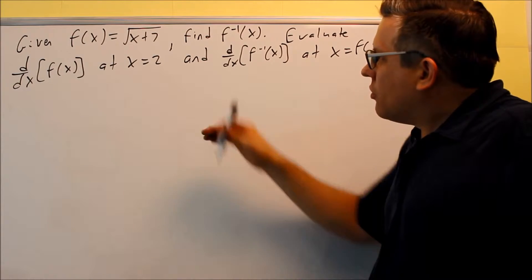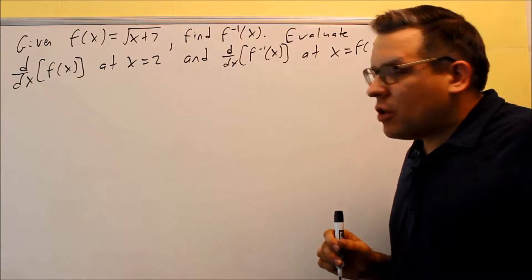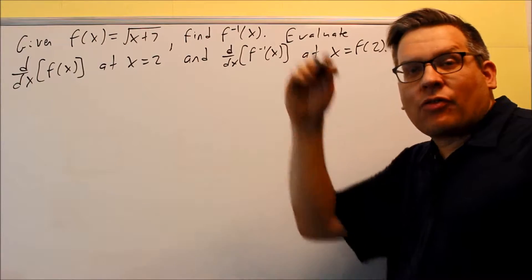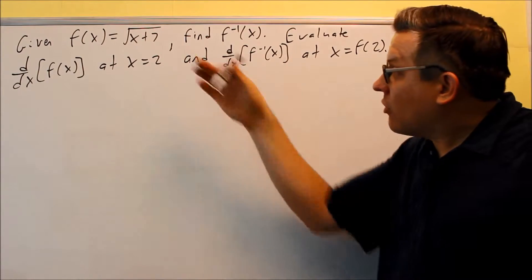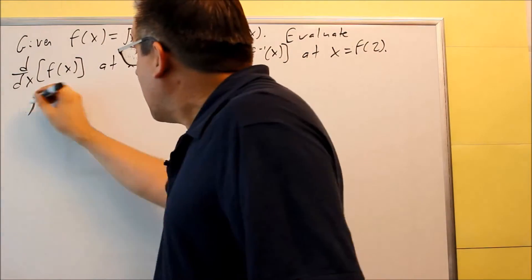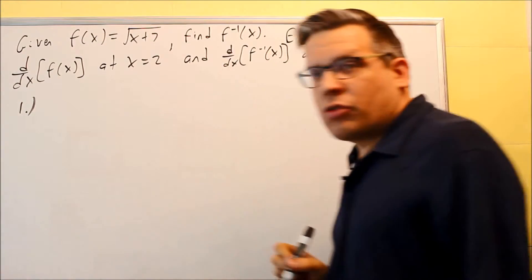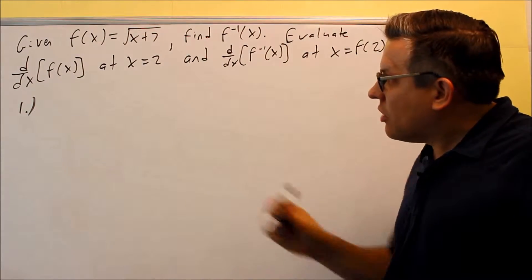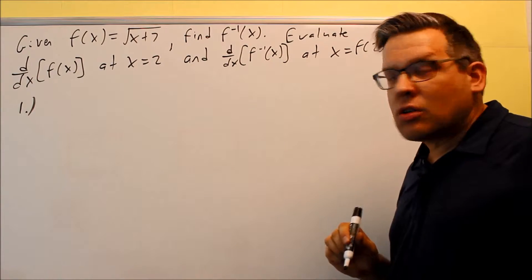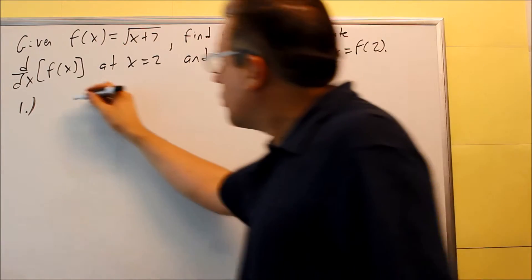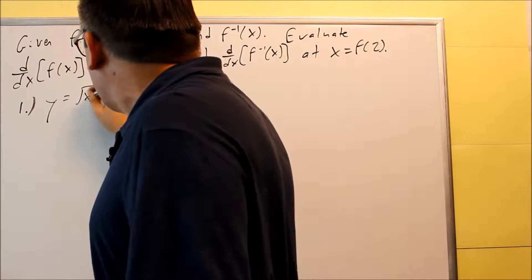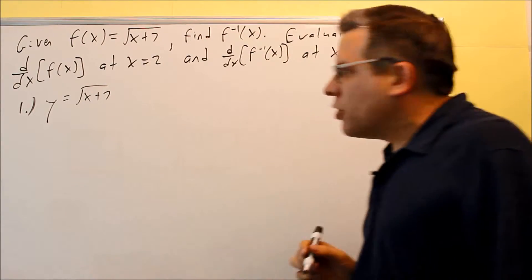First, we want to find the inverse. In the notes for this section, I have a four-step process for finding an inverse. Step one says you take the original function and replace f(x) with y. So y equals square root of x plus 7.